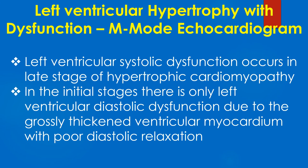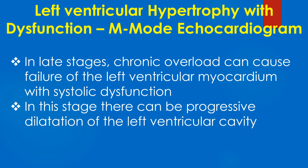Left ventricular systolic dysfunction occurs in the late stage of hypertrophic cardiomyopathy. In the initial stages, there is only left ventricular diastolic dysfunction due to the grossly thickened ventricular myocardium with poor diastolic relaxation. In late stages, chronic overload can cause failure of the left ventricular myocardium with systolic dysfunction.